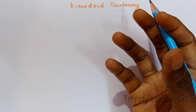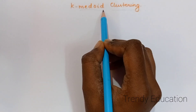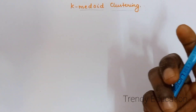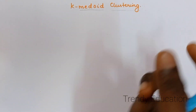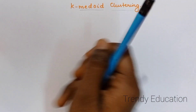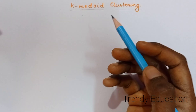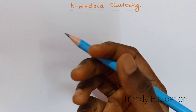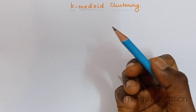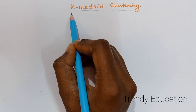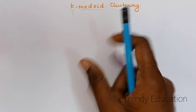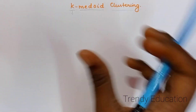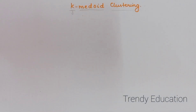So what is a medoid? A medoid is nothing but the centrally located object — the object which is actually located in the center. And what does K represent? K is nothing but the number of clusters. When you give K equal to 2, your number of clusters is 2. When you give K equal to 3, your number of clusters is 3. This K value is user-defined — the one who is performing the clustering gives this value. That is what K-Medoid clustering is.